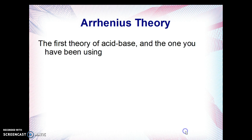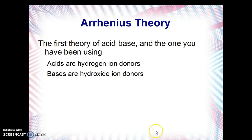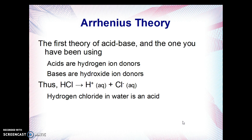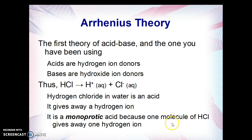The Arrhenius theory was the first to be developed about acids and bases in the early part of the 20th century. It says that acids are hydrogen ion donors — things that raise the concentration of hydrogen ions — and bases are hydroxide ion donors, things that raise the concentration of hydroxide ions. For example, HCl reacting to form H⁺(aq) plus Cl⁻(aq) shows that hydrogen chloride in water is an acid — it gives away a hydrogen ion. It is a monoprotic acid because one molecule of HCl gives away only one hydrogen ion, one proton.